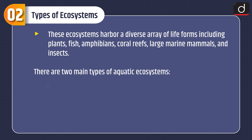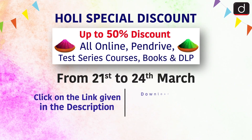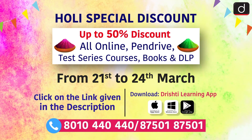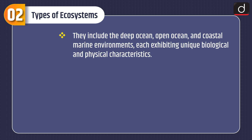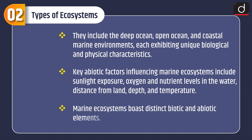There are two main types of aquatic ecosystems. Marine ecosystems are characterized by high concentrations of dissolved salt. They include the deep ocean, open ocean and coastal marine environments, each exhibiting unique biological and physical characteristics. Key abiotic factors influencing marine ecosystems include sunlight exposure, oxygen and nutrient levels in the water, distance from land, depth and temperature. Marine ecosystems boast distinct biotic and abiotic elements.